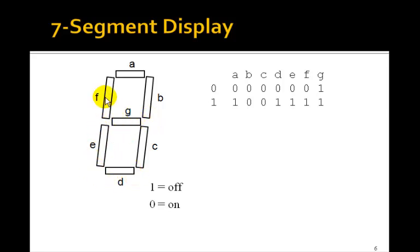A two would look like this, so we want to turn off F and C. So we turn on F and C by putting ones there. To make a three, we need to turn off F and E. So F and E turn off for three.